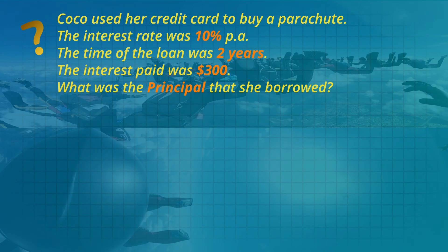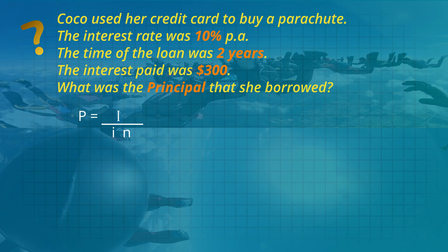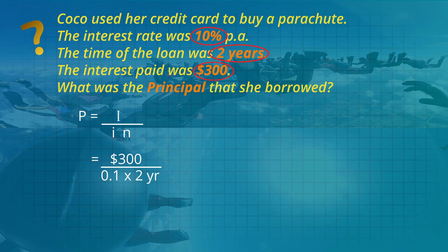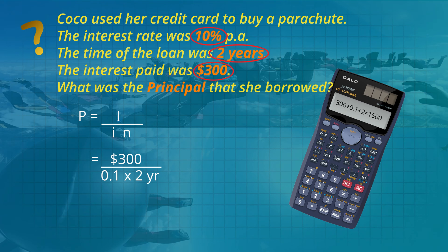Coco used her credit card to buy a parachute. The interest rate was ten percent per year, the time of the loan was two years, and the interest paid was three hundred dollars. What was the principal that she borrowed? P equals big I divided by the other two — remember to write the percentage as a decimal. The interest is three hundred dollars, the interest rate is zero point one, and the number of years of the loan is two years. So three hundred divided by zero point one divided by two is the one thousand five hundred dollars that Coco borrowed.